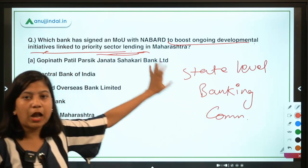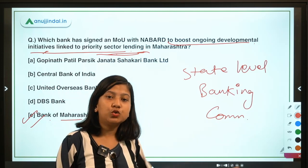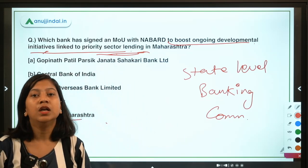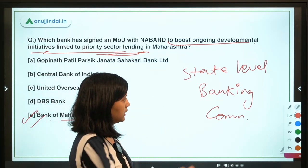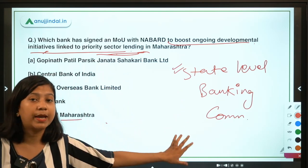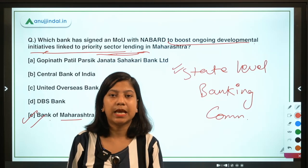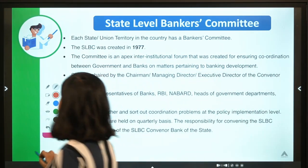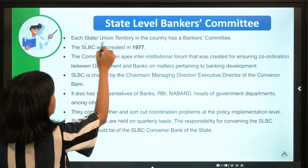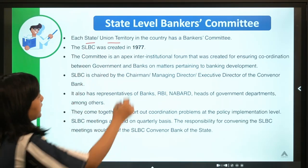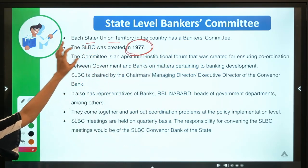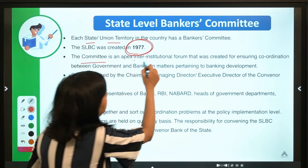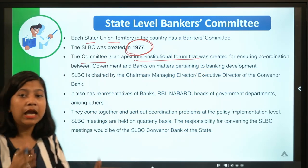Here the role of the State Level Bankers Committee (SLBC) comes in. Bank of Maharashtra is currently the convener of this SLBC, and by virtue of being the convener, this bank will promote priority-sector-lending-based projects in Maharashtra. What is the State Level Bankers Committee? Each state and union territory has one bankers committee, and it came into effect in 1977. This is an inter-institutional forum created for ensuring coordination between the government and the banking sector.